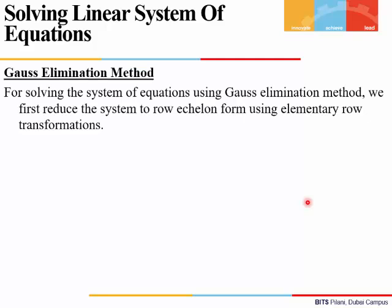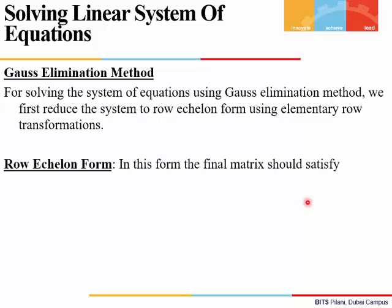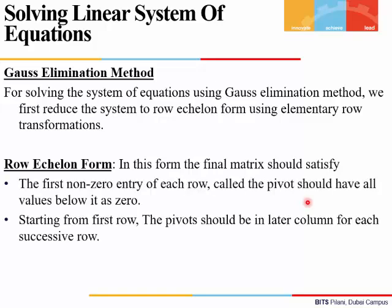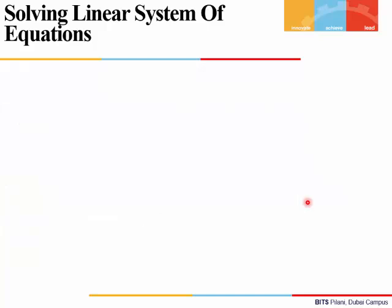The first method we use to solve such systems is Gauss elimination, which is the best way for finding the solution of equations. For this, we reduce the system Ax equals B into row echelon form (REF). In row echelon form, the first non-zero entry of each row — called the pivot — should have all values below it equal to zero. Starting from the first row, the pivot should be in a later column for each successive row, and rows with all zeros should be at the end.